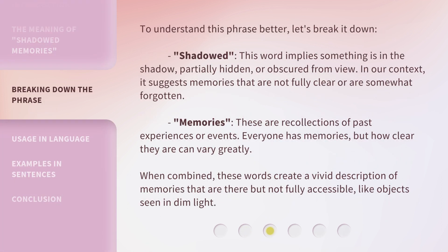To understand this phrase better, let's break it down. 'Shadowed' — this word implies something is in the shadow, partially hidden, or obscured from view. In our context, it suggests memories that are not fully clear or somewhat forgotten. 'Memories' — these are recollections of past experiences or events. Everyone has memories, but how clear they are can vary greatly. When combined, these words create a vivid description of memories that are there but not fully accessible, like objects seen in dim light.